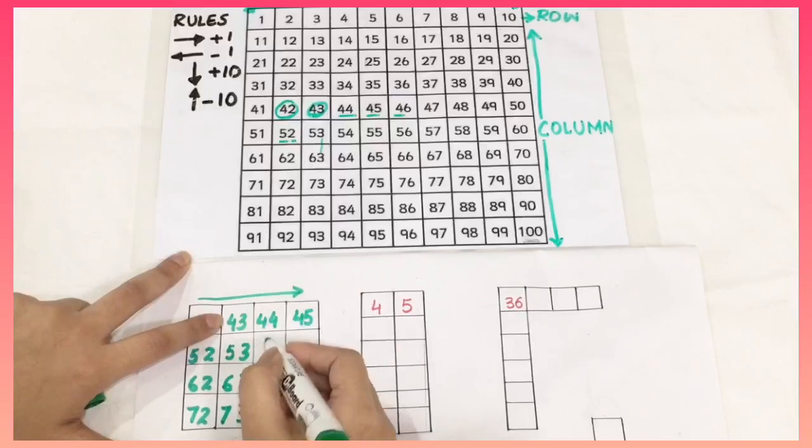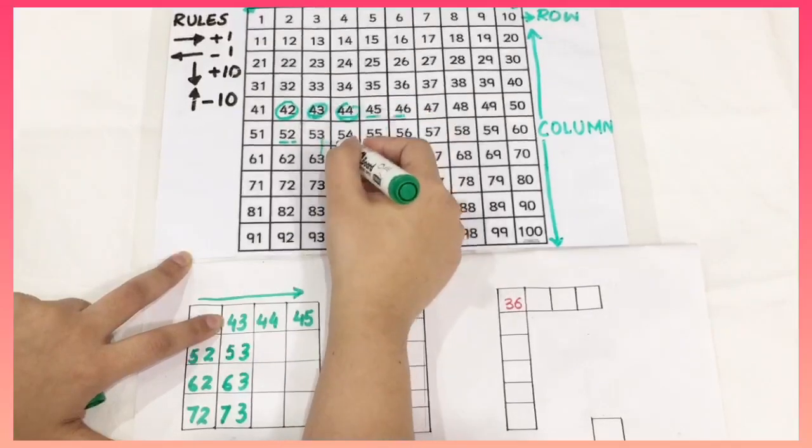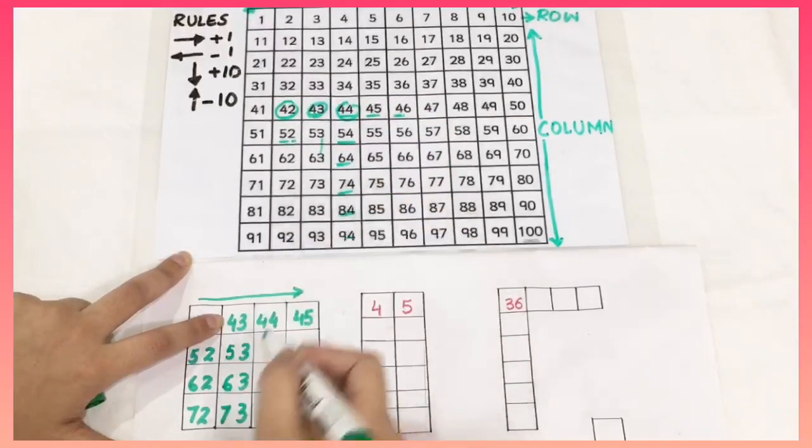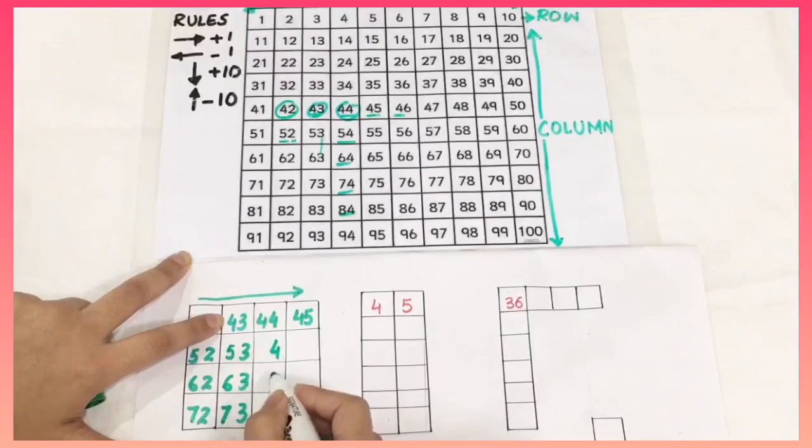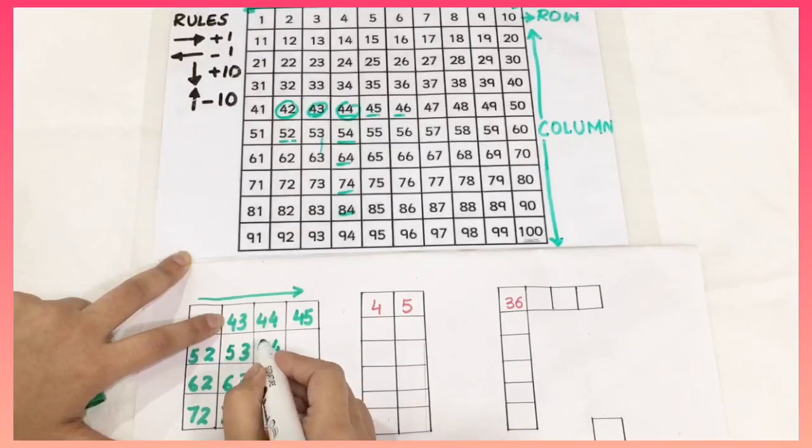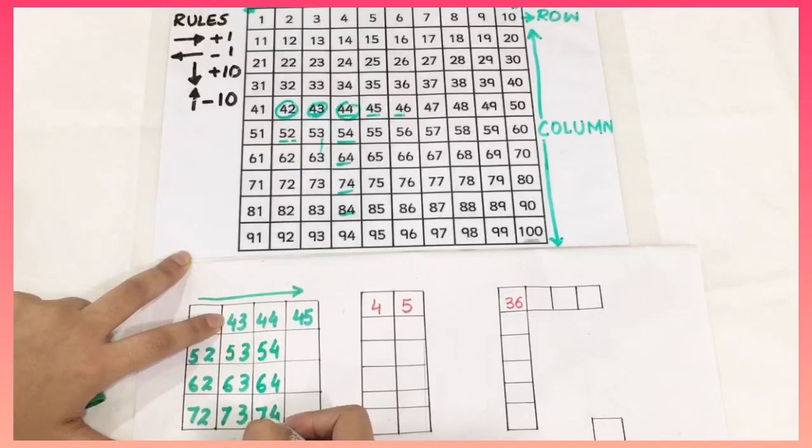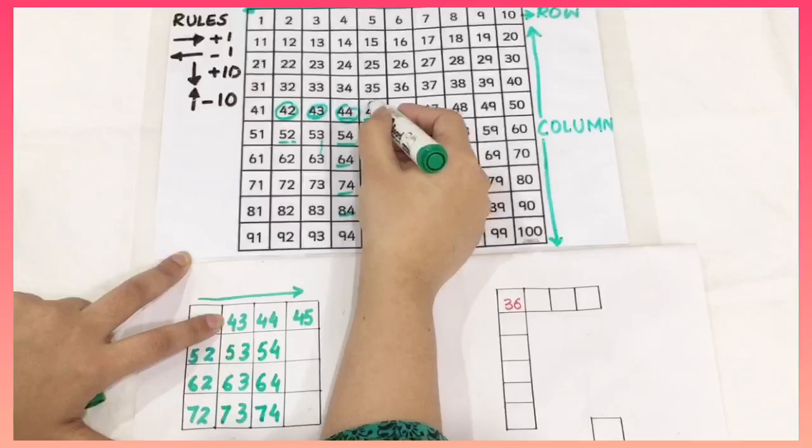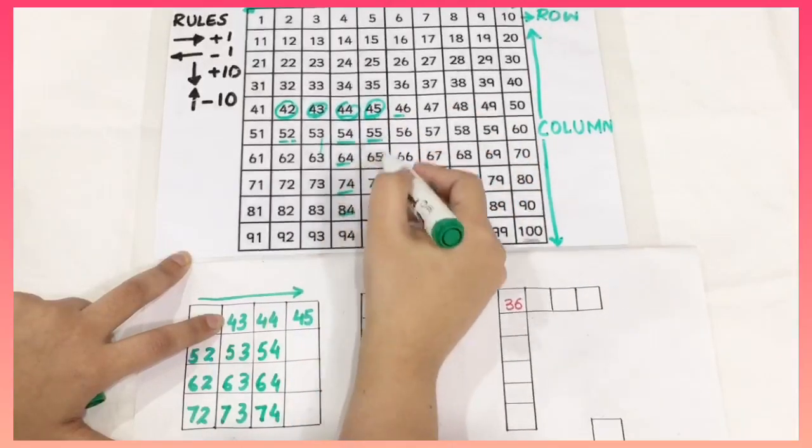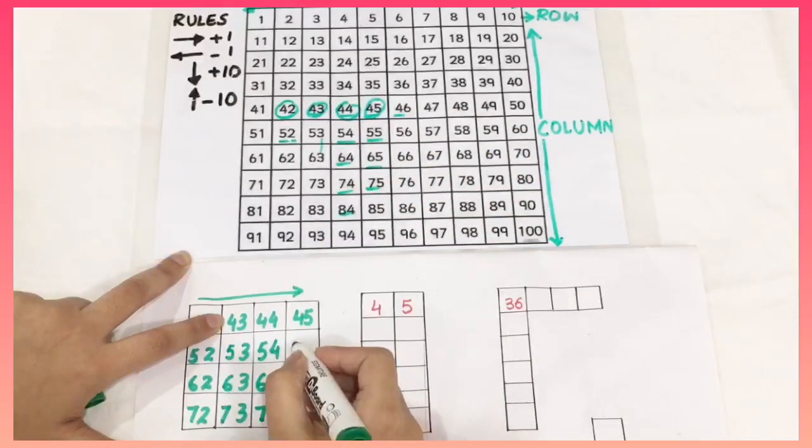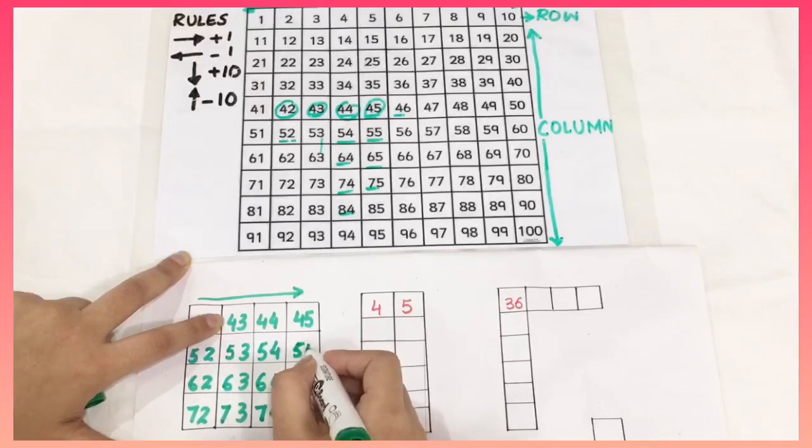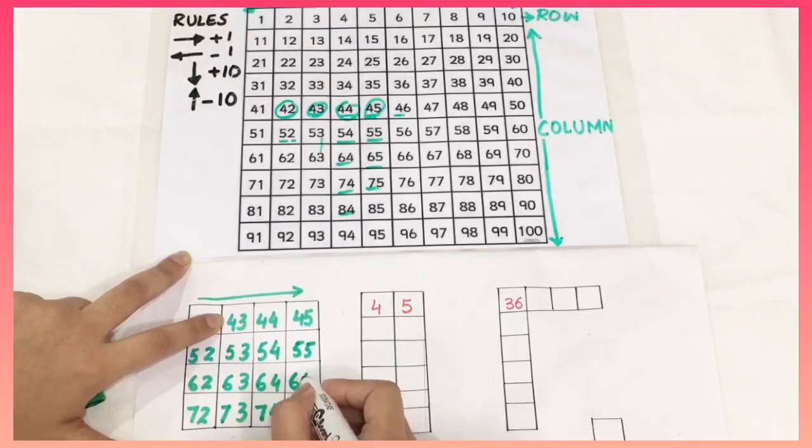Now again, I have 44 here and its line is here. I am going to write 4 in the units place. And again in increasing manner, I am going to write 5, 6 and 7. 45 is here and below are these numbers. This will be 55, 65 and this is 75.